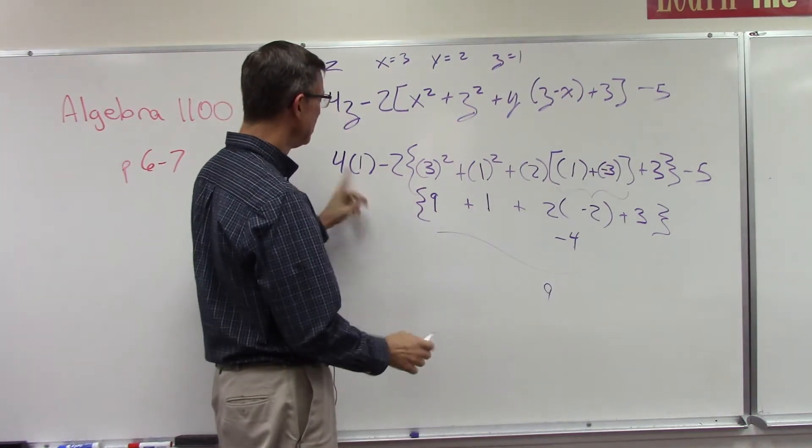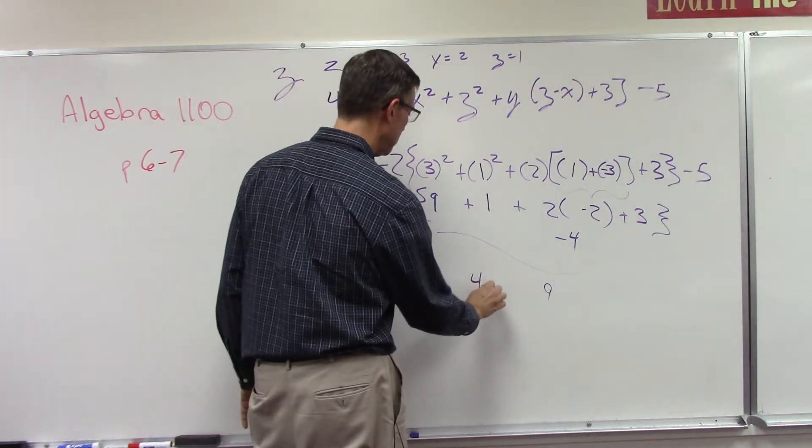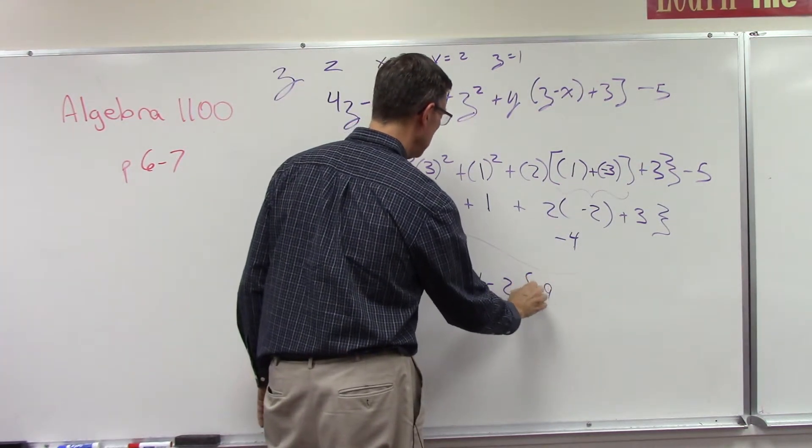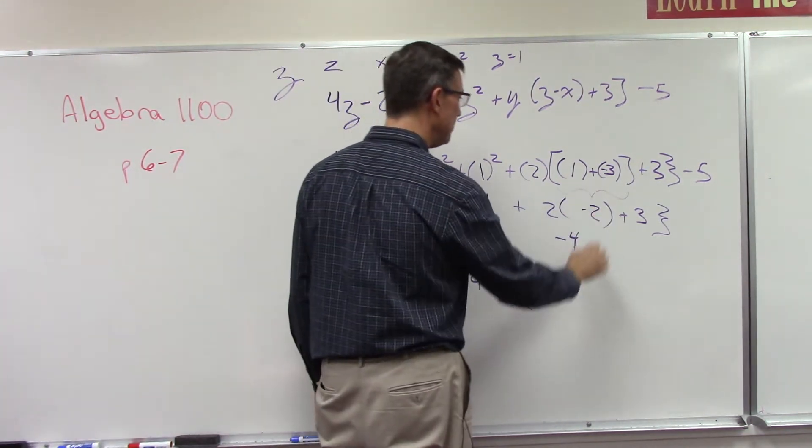So now let's bring this down. 4 times 1 is 4 minus 2, okay, and then this whole thing became 9.